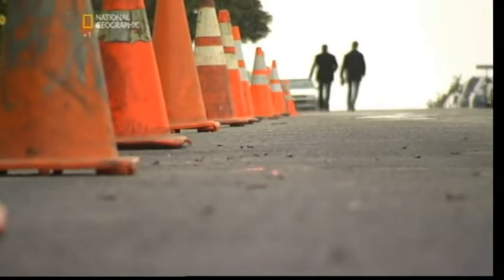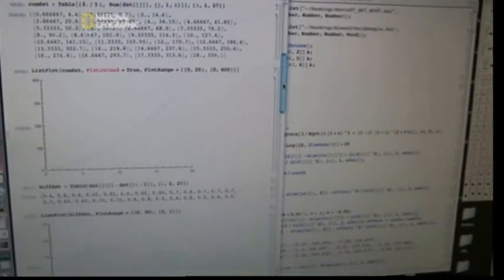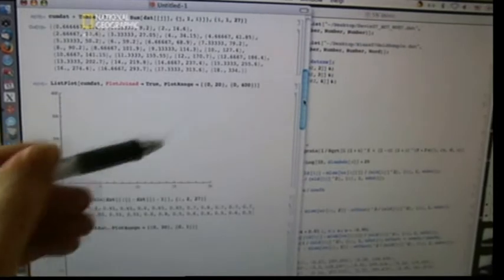This right here is the data that I took with Eric, the cumulative distance traveled by the car as a function of time. And that's beautiful. It's this nice parabolic shape. That's exactly what you expect for an accelerating body.